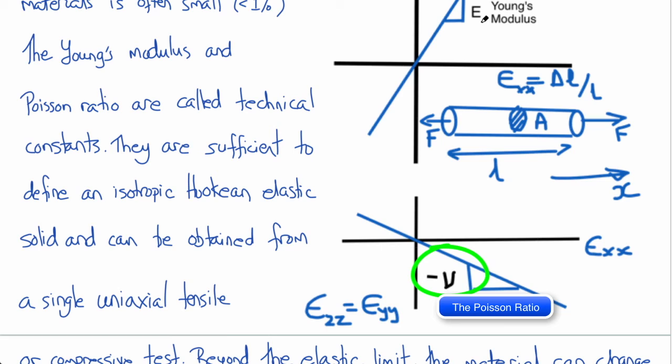These two technical constants, E the Young's modulus and nu the Poisson ratio, can both be measured at the same time in a single uniaxial tension test. And if the material is isotropic, meaning that had we done that same test from a sample of the material cut from any other orientation, we would have got the same result.